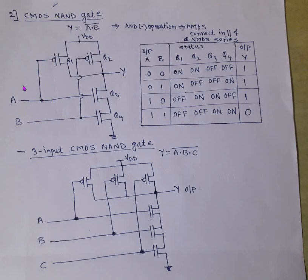Similarly, if you want to draw a 3-input CMOS NAND gate, there are three inputs. Since this is an AND operation, three PMOS are used and connected in parallel, and exactly complementing that, three NMOS are used and connected in series. Inputs A, B, and C are applied, and the output is Y = (A·B·C)̄ — a 3-input NAND gate.